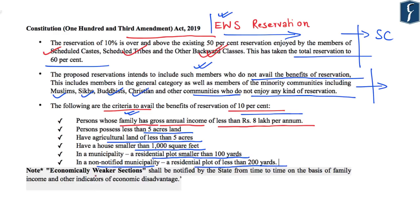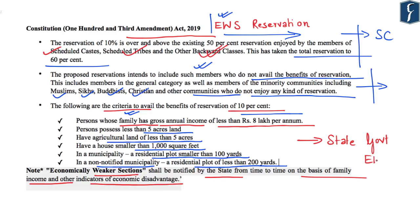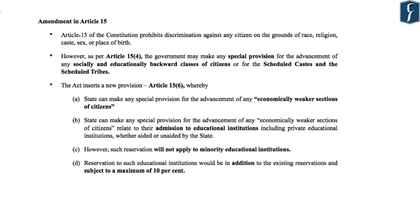Economically weaker sections shall be notified by different state governments from time to time on the basis of family income and other indicators of economic disadvantage. State governments can thus come up with their own set of criteria to give reservation under EWS. The Constitution 103rd Amendment Act 2019 has introduced Article 15(6) and Article 16(6).